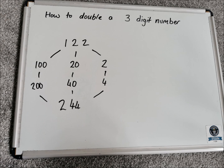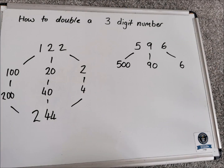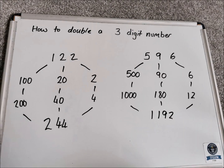Let's try another example with 596. If we partition that, we get 500, 90, and 6. We then double each section: double 500 is 1000, double 90 is 180, and double 6 is 12. Bringing all those sections together we get 1192. Take your time adding those up — if you need to do a chimney sum at the side, that's absolutely fine.